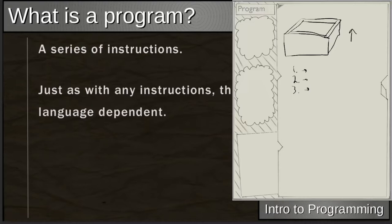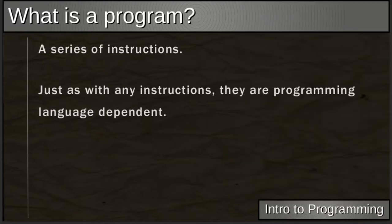The idea with a program is it doesn't have any human context, so you're just giving it a series of instructions to perform whatever operations you want. Just as if you were talking to somebody who only knew French, you'd have to give them instructions in French. Similarly, there are programming languages that vary in syntax — similar to how human languages have nouns and verbs.